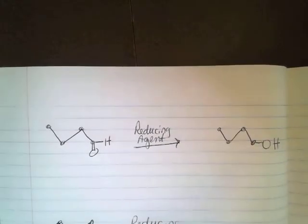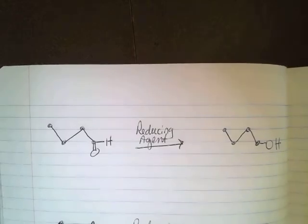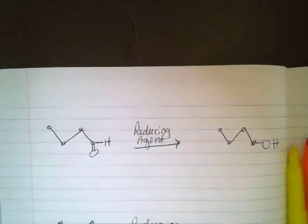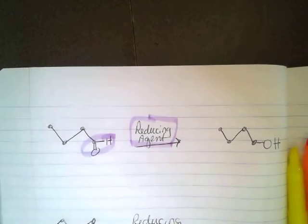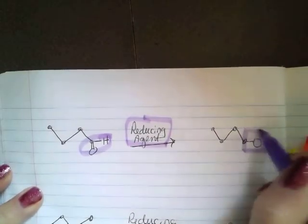On this first example of reduction of an aldehyde, let's just take a look at the structures. We have an aldehyde, keyword right here, reducing agent, and whenever an aldehyde is reduced we get a primary alcohol.